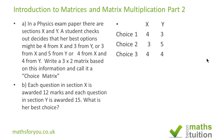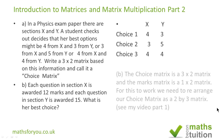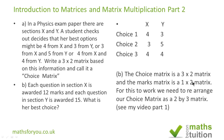That is a 3 by 2 matrix. Now for the marks matrix, we have got a 1 by 2 matrix. For this to work — if you have a look at my video on part 1 — you cannot do a 1 by 2 matrix times a 3 by 2 matrix. That wouldn't work. So to do that, you need to rearrange your choice matrix.